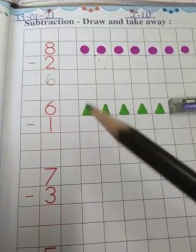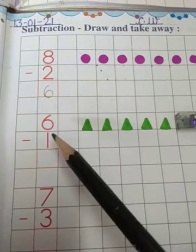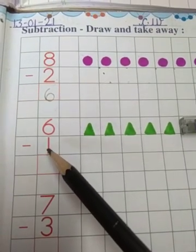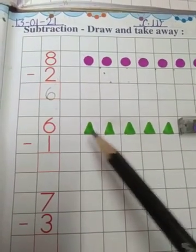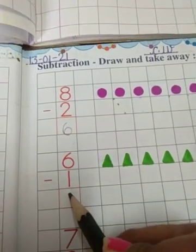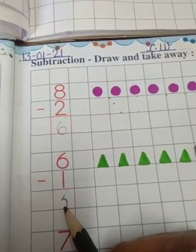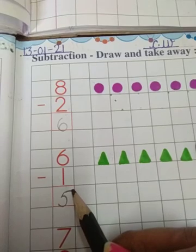5 triangles are left. It means whenever you subtract 1 from 6, you will get 5. Okay. So, I am going to write 5 here. Okay.